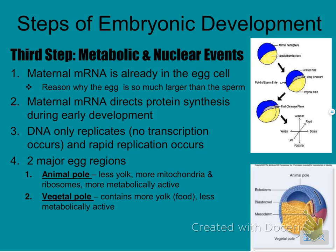Step three is metabolic and nuclear events. mRNA should not be a new term. Maternal mRNA is what's in the egg cell — whether you're male or female, your RNA came from your mother because it's present in the egg, not the sperm. This is also why the egg is so much larger: it has all this maternal mRNA, which directs protein synthesis during early development. The DNA only replicates — there is no DNA-to-RNA transcription happening; the RNA is already there.